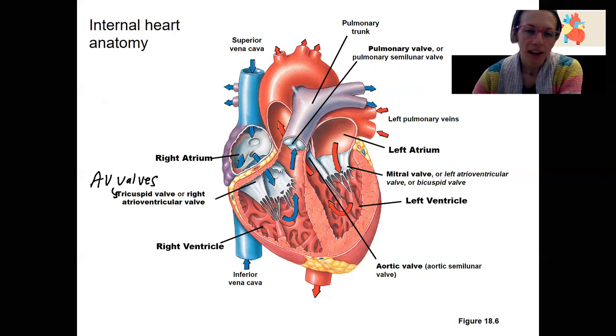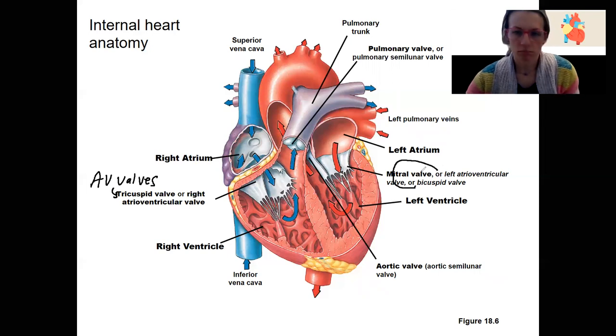Tricuspid has three pieces to it. We'll see that better view in a moment. And the mitral valve is the other one or bicuspid. It has two pieces to it, left atrial ventricular and right atrial ventricular.